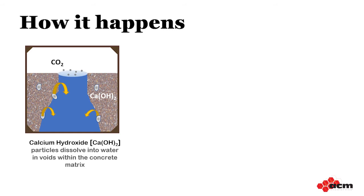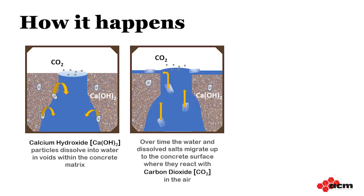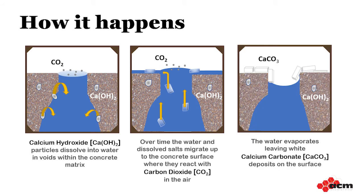Here's a simplified version of how efflorescence occurs. During the cement hydration process, a byproduct called calcium hydroxide is produced. As we see in the graphic, these calcium hydroxide particles in the concrete matrix are slightly soluble in water. So if there's water present in the voids in the concrete matrix, it's fair game for the calcium hydroxide to dissolve into. Over time, the water and soluble salt solution can migrate back to the surface of the unit. At that point, the calcium hydroxide reacts with carbon dioxide in the air and produces calcium carbonate. When the water evaporates, it leaves behind white calcium carbonate deposits, or efflorescence.